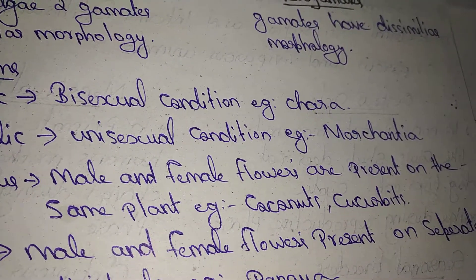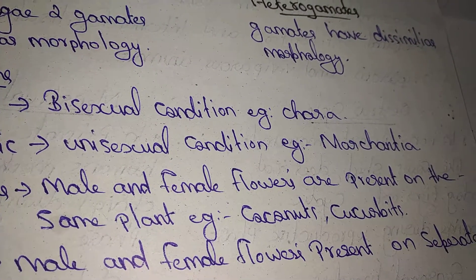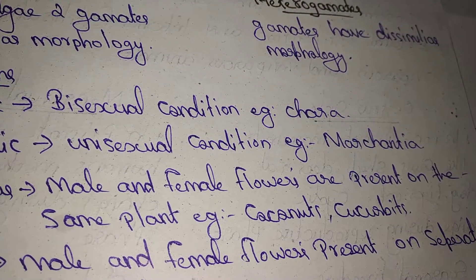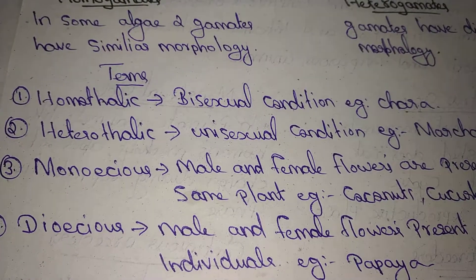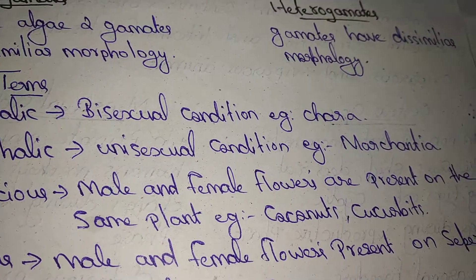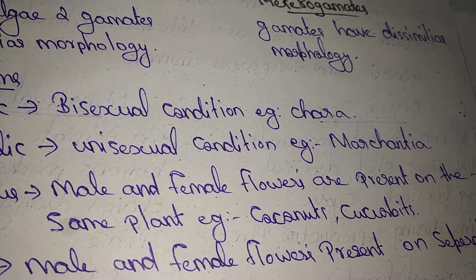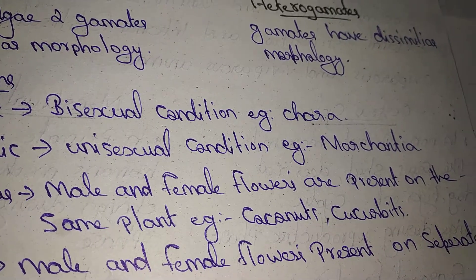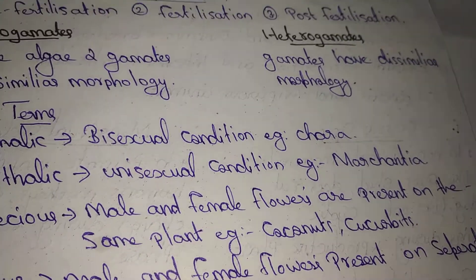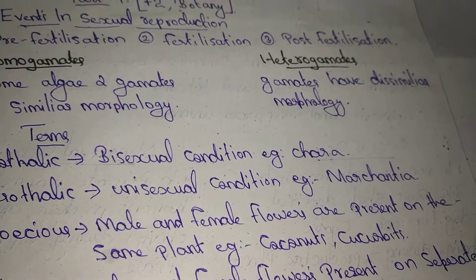Male and female flowers present on the same plant — we call it monoecious. Example: coconut, cucurbits.